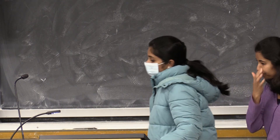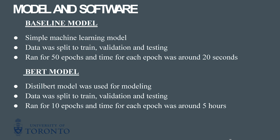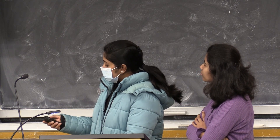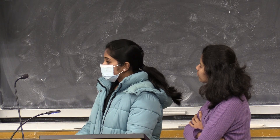Talking about the model and the software, our baseline model is a simple machine learning model. We ran the model for 50 epochs and the time for each epoch was around 20 seconds. We used a distilled BERT model because it is a lighter model, and we used a pre-trained distilled BERT model. The data was split into train, validation, and testing for both the baseline and BERT models. For the BERT model, we ran for 10 epochs and the time for each epoch was around four to five hours. The input to both models was tokenized sentences, and the output was probabilities assigned to each of the six labels.